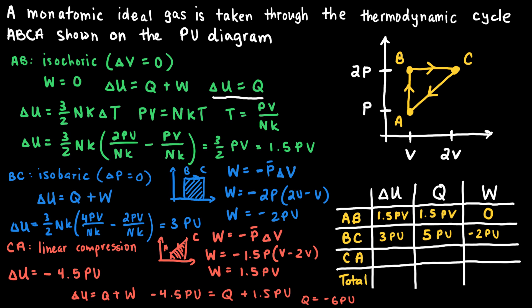Now we can fill in the rest of our chart. For process CA: the change in internal energy delta U = −4.5PV, the heat Q = −6PV (removed from the system), and the work W = +1.5PV.